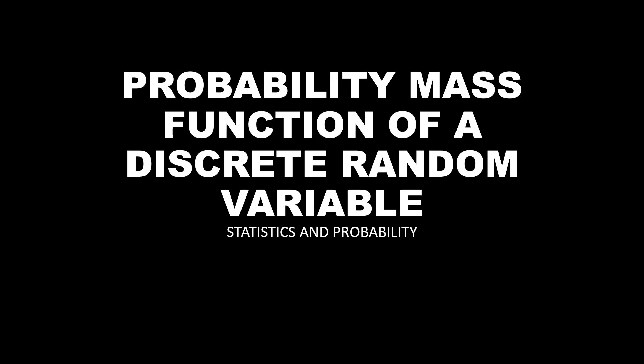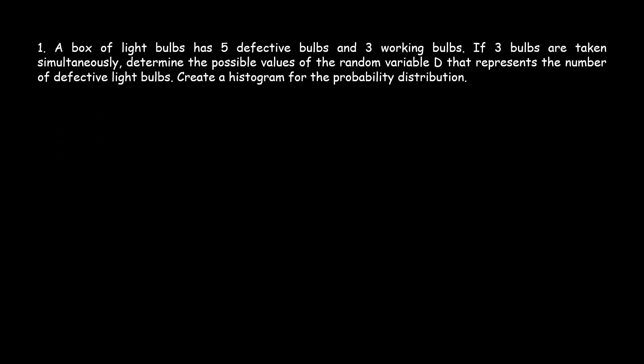Hello everyone. In this video we're going to learn how to solve a probability mass function of a discrete random variable as well as doing some histograms. Our first example: a box of light bulbs has five defective bulbs and three working bulbs. If three bulbs are taken simultaneously, determine the possible values of the random variable D that represents the number of defective light bulbs, and create a histogram for the probability distribution.